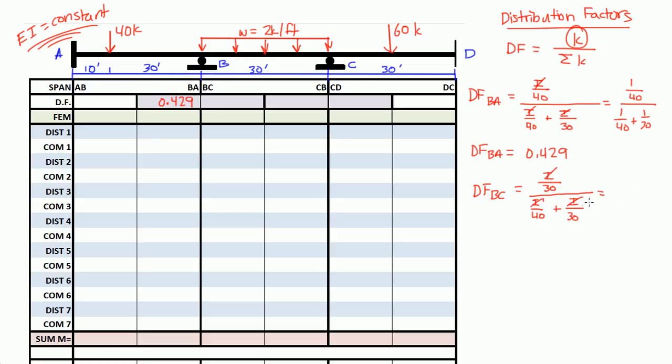And again, I is our constant, so we can cancel them out. We get 1 over 30 divided by 1 over 40 plus 1 over 30. And if you plug that into your calculator, you should get distribution factor for BC is 0.571. So I'm going to write that here, 0.571.